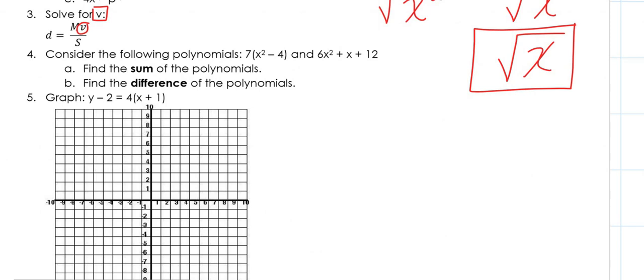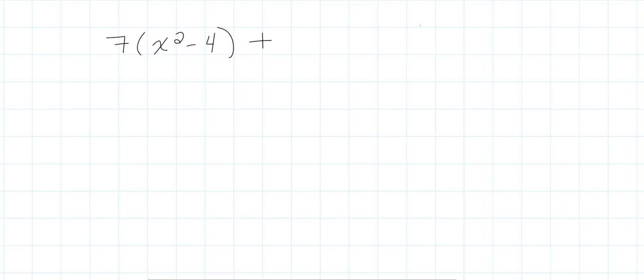Number 4: consider the polynomials 7(x squared minus 4) and 6x squared plus x plus 12. Part a says find the sum — meaning add them together. So we write 7(x squared minus 4) plus 6x squared plus x plus 12.